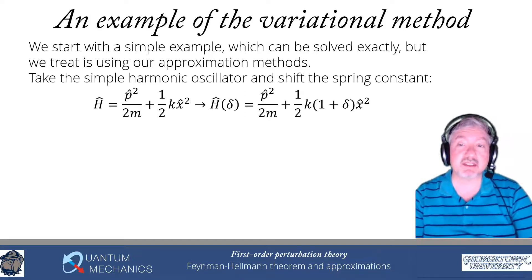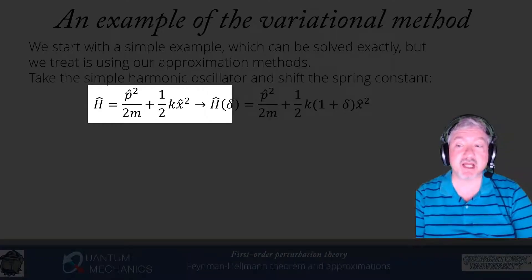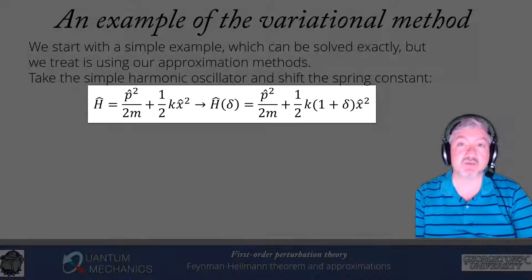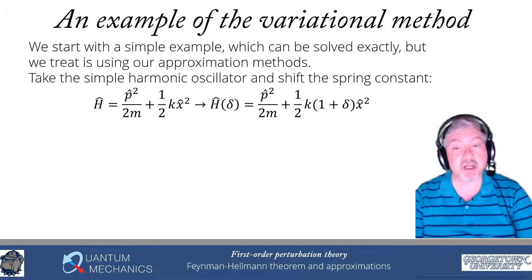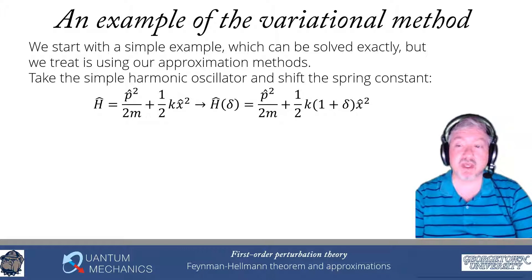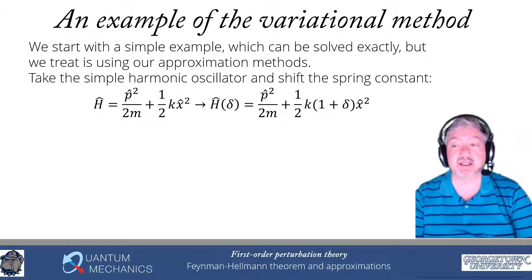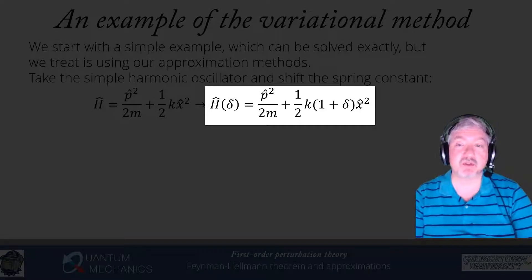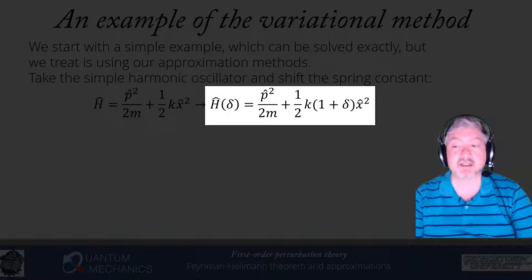What we're going to do is take the simple harmonic oscillator with a shifted spring constant. We've been writing the potential as one-half m omega squared, but I can write it as one-half k x squared, recalling that omega equals the square root of k over m. If I shift the spring constant by delta k, where delta is a number times the original spring constant k, I get a perturbed Hamiltonian H of delta, which is p-hat squared over 2m plus one-half k times (1 plus delta) x-hat squared.